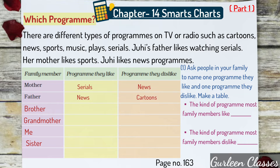Next topic is 'Which Program?' from your Maths NCERT book page number 163. There are different types of programs on TV or radio such as cartoons, news, sports, music, plays, and serials. Juhi's father likes watching serials, her mother likes sports, and Juhi likes news programs. Ask people in your family to name one program they like and one they dislike, and make a table with columns: family member, program they like, and program they dislike.